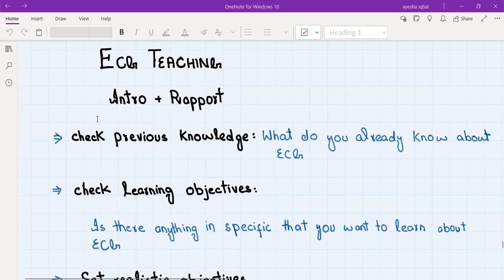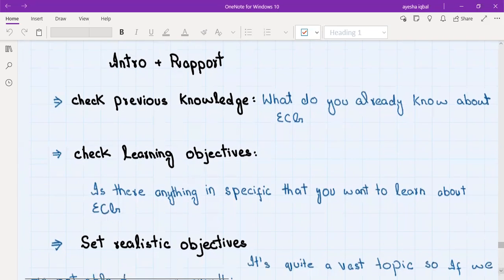The next step will be checking the previous knowledge. So we'll ask the student what do you already know about ECG and check the previous understanding. Then we will check the learning objectives. We will ask them if there's anything in specific that they want to learn about ECG.